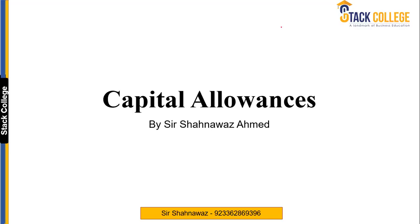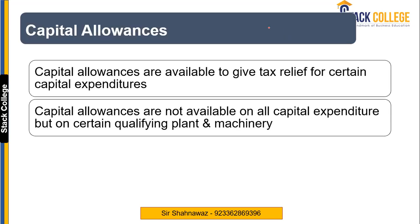Capital allowances, which are also known as tax depreciation, are basically available against your accounting depreciation. We need to understand on which assets capital allowances are available and on which assets capital allowances are not available. Capital allowances are available to provide tax relief against capital expenditure, but they are not available on all capital expenditure because capital expenditure also includes land, building, and other things.